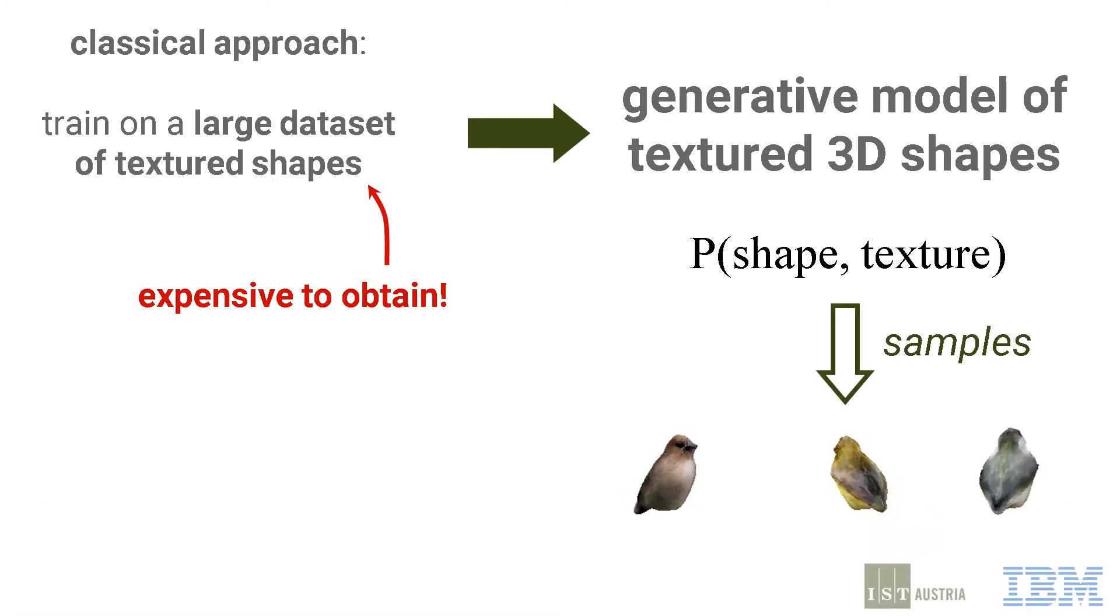The traditional approach to building a generative model over textured 3D shapes would be to create a large data set of them, then to use that data set to train a GAN or a VAE. However, 3D shapes with detailed texture are expensive data to obtain.